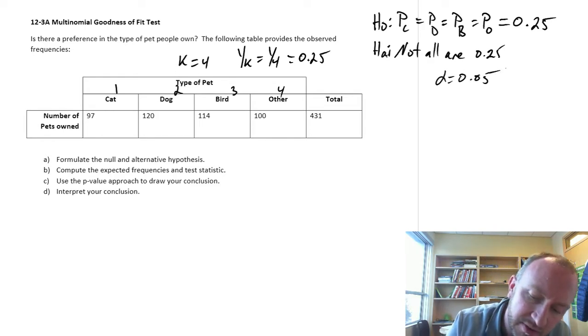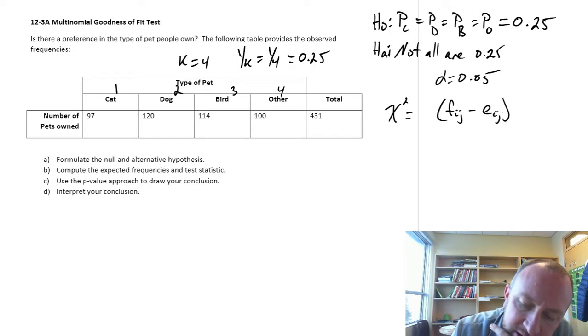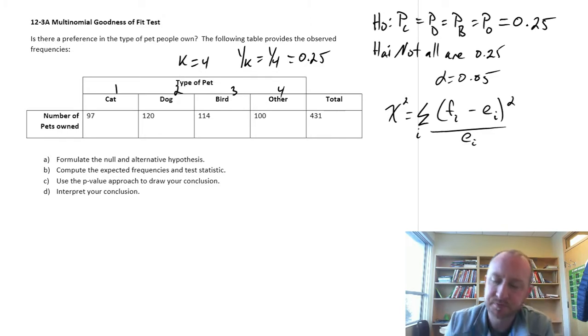Alpha is 0.05, and the test statistic that we need, you are going to be so familiar with this one, it's our observed frequency minus our expected, squared, over our expected, and I don't really need i and j because we only have one. This is just the i, and we add those up across our four different values.